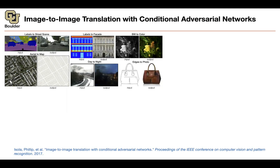Now you're switching the role of your labels and images. That was your input previously; this is your output. Now you switch the role: this is your input — generate images for me. You can go back and forth between aerial to map and map to aerial. You can go from labels to facade, which is very similar to labels to street scenes.